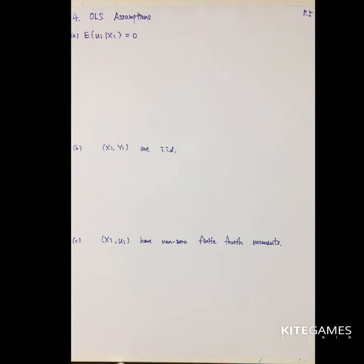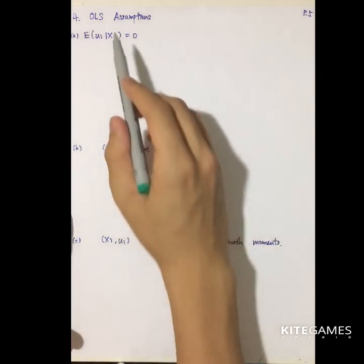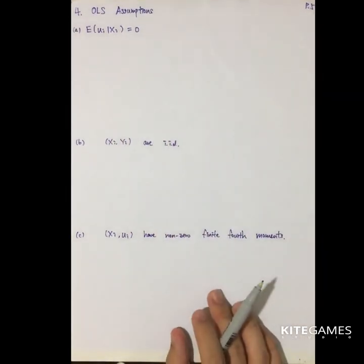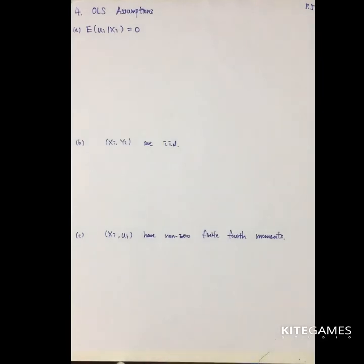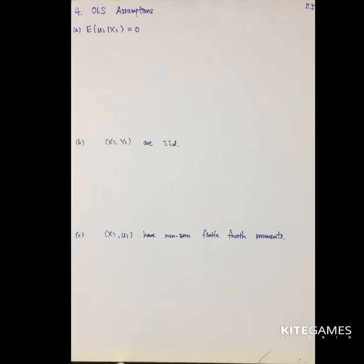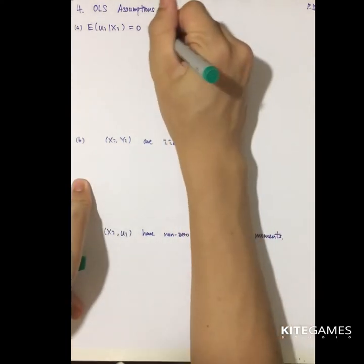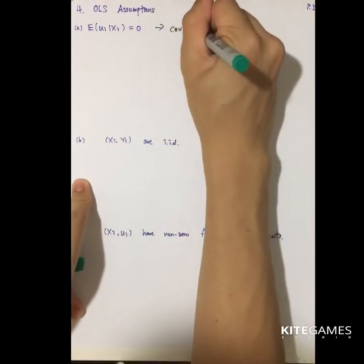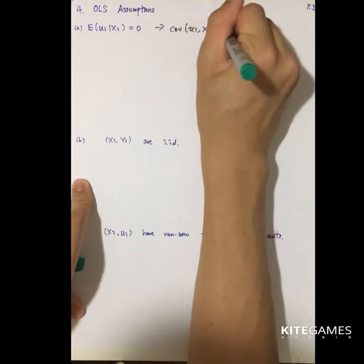So the first one, maybe the most important one, is the expected value of u given x_i is zero. That means we need to ensure that the expected value of the error term is zero. One implication of E[u|x]=0 is that the covariance between u_i and x_i is zero.